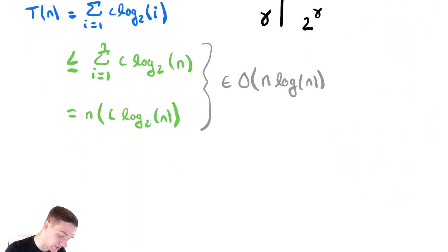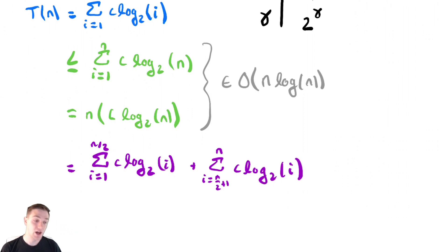Now, let us bound this below. I'm going to do that in purple here. Begin by splitting the summation in half. The sum from i equals 1 to n over 2 of c log base 2 of i plus the sum from i equals n over 2 plus 1 to n of c log base 2 of i.